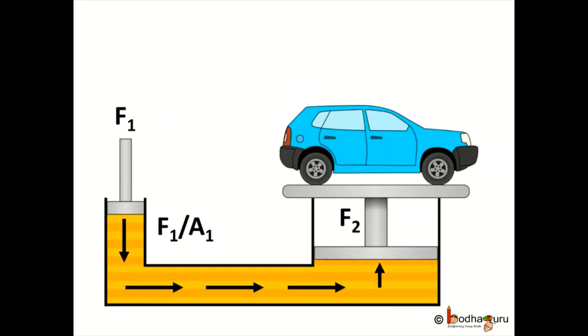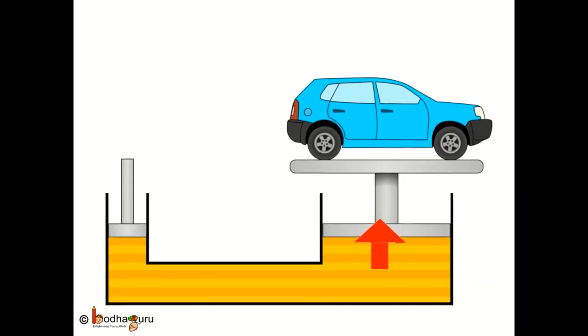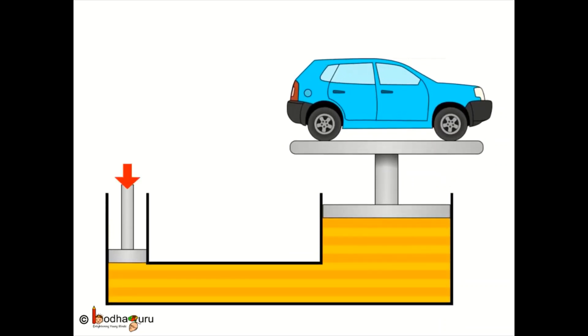Now in case you have not noticed, the upward force applied on the second tube or the second piston is A2 times the force we applied on the smaller tube or the piston. So we see force gets multiplied many times. Thus we can generate enough push to lift a heavy car by applying a much smaller downward push in the smaller piston.